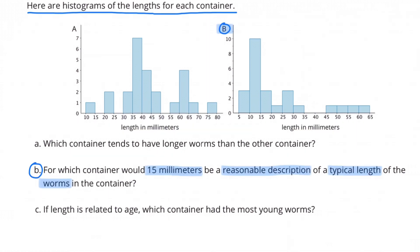For which container would 15 millimeters be a reasonable description of a typical length of the worms in the container? Worms in container B have a typical length of 15 millimeters.